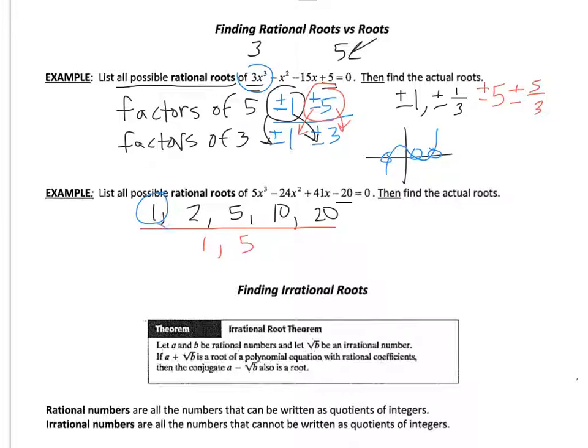So I'm going to do the first one is going to be plus or minus 1. Second one, plus or minus 1 fifth. Then I do this number, plus or minus 2. And then plus or minus 2 fifths. I realize I forgot 4. So I'm going to do plus or minus 4, plus or minus 4 fifths.